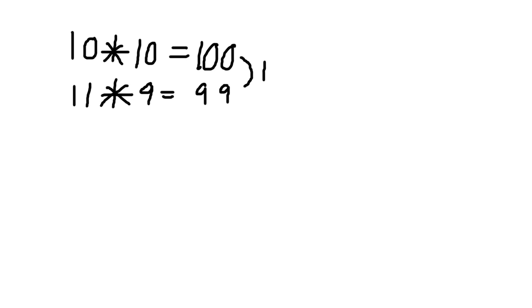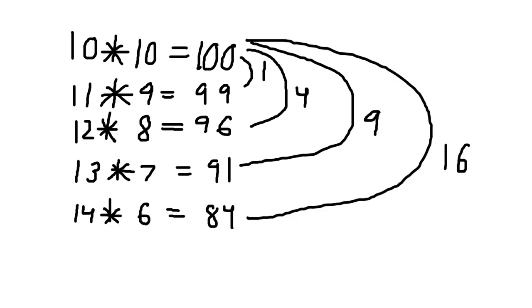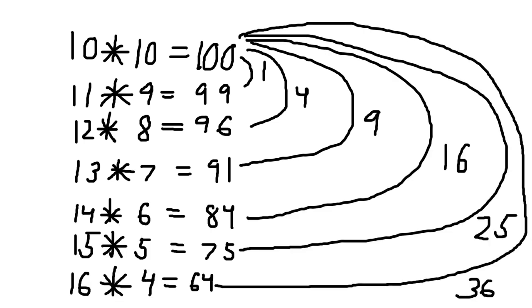And then doing that one more time gives you 12 times 8, which is 96, which is 4 off from 100. And then it's 9 off from 100, and then 16, and then 25, and then 36, and so on and so forth. In other words, the way you decompose a square is by breaking off squares until you get to 0. I don't know, I always thought that was pretty cool.